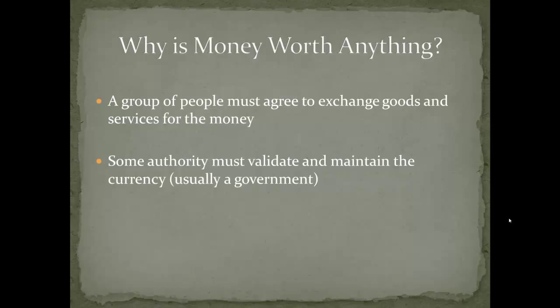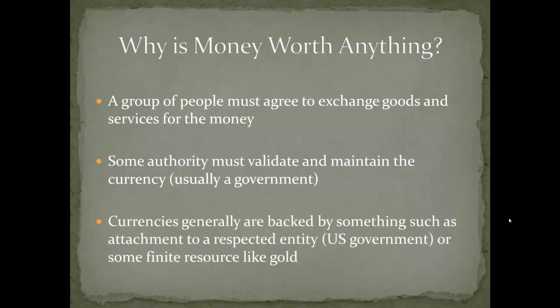We also acknowledge that some authority has to be in charge of validating and maintaining that money. We can't just make up our own money and independently negotiate with people to accept it — then we're back to bartering. Instead we say: Federal Reserve System, Central Bank of Europe, Central Bank of China — you are in charge of the currency of our people. You validate it, maintain it, and deal with proxies to print and distribute it. We entrust a small group of special people to validate and maintain our currency.